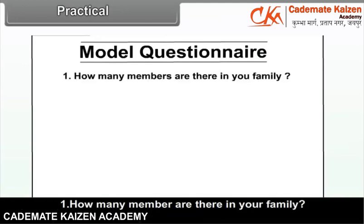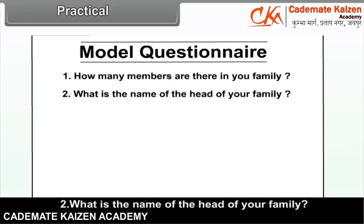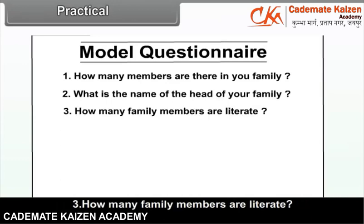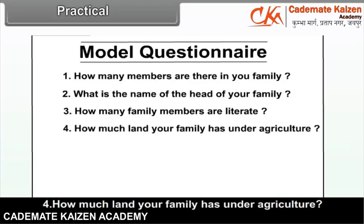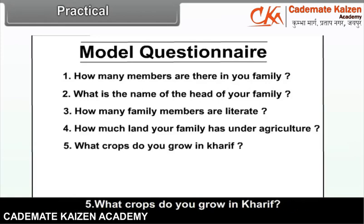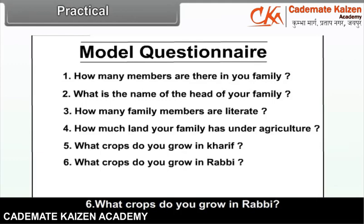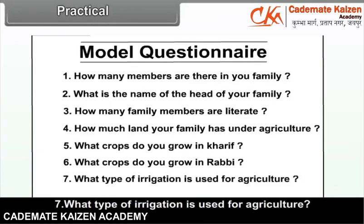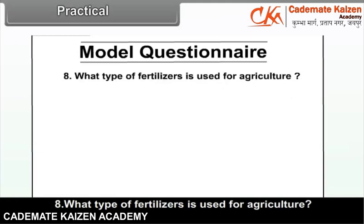How many members are there in your family? What is the name of the head of your family? How many family members are literate? How much land does your family have under agriculture? What crops do you grow in Kharif? What crops do you grow in Rabi? What type of irrigation is used for agriculture?